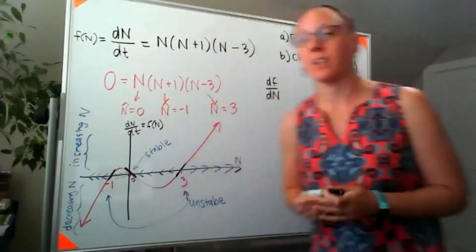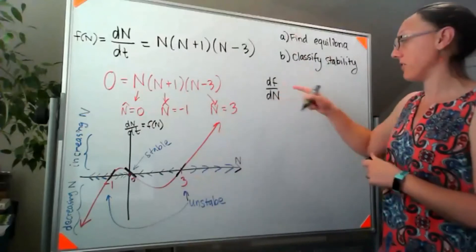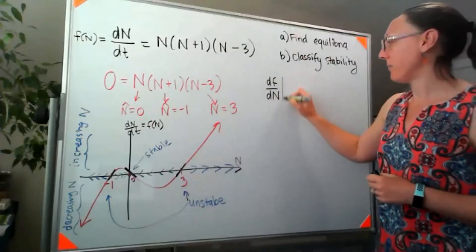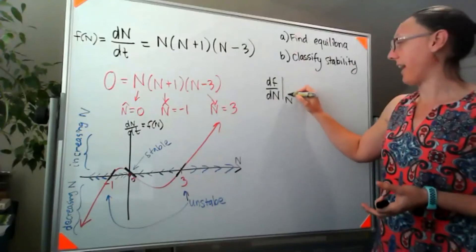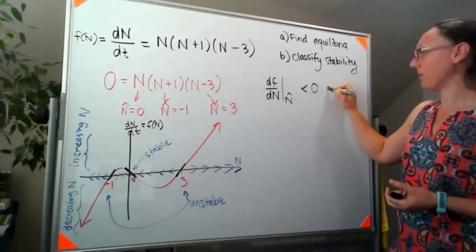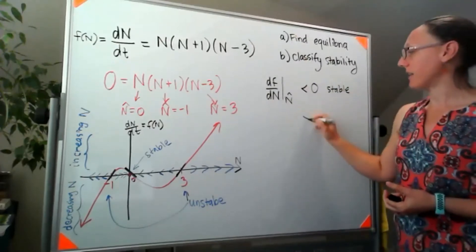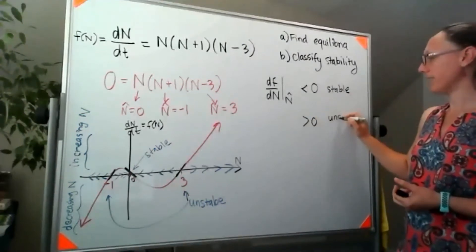So our local stability criterion looks like when we take the derivative of the function with respect to n and evaluate it at n star or n hat, if this is less than zero, we've got a stable equilibrium. And if it's greater than zero, it's unstable.